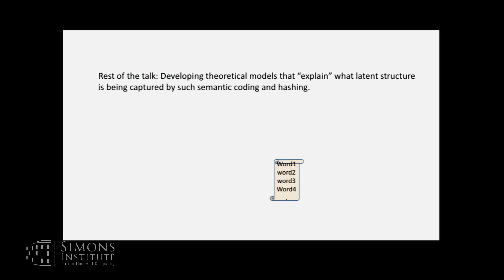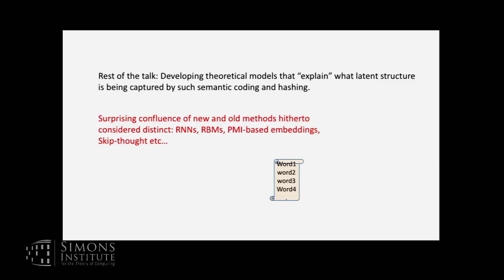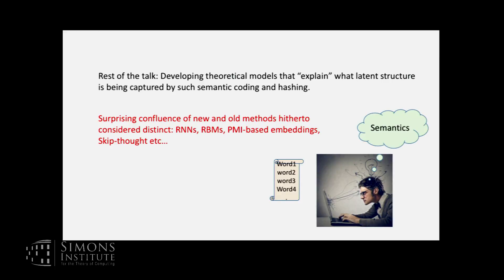The rest of the talk: we'll develop theoretical models explaining what latent structure has been captured by semantic coding and hashing. We'll see a surprising confluence of new and old methods — RNNs, RBMs, PMI-based embeddings, skip-thoughts — some from different fields. The idea is there's some semantic process in the head of the writer, and that process leads to some words appearing. There must be some connection between the underlying semantic process and the emitted words, and we've come up with a very simple model for that.